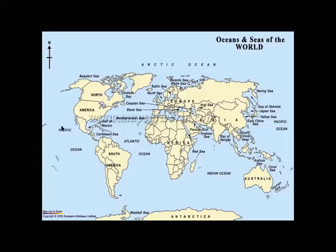This is the Pacific Ocean — this and this. It is showing both sides because the Earth is round and we cannot see the back side.